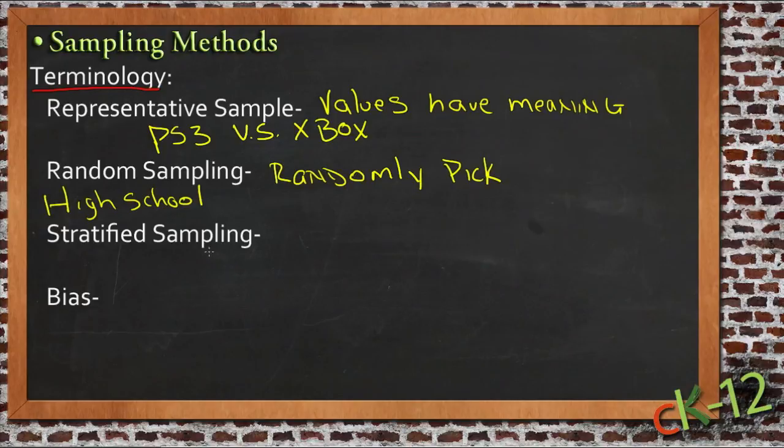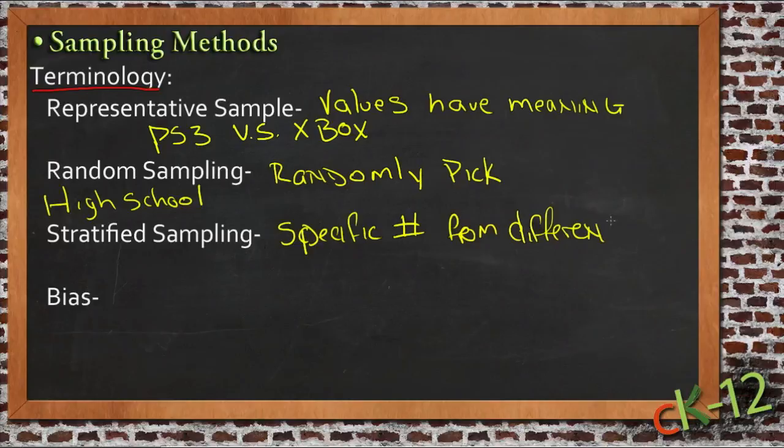Now a stratified sampling would take care of the problem that we originally ran into, and that was maybe the age issue. A stratified sampling chooses a specific number from each area of whatever your values are, a specific number from different groups of people or different groups of values.